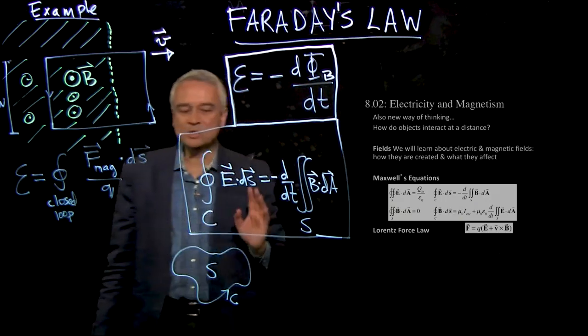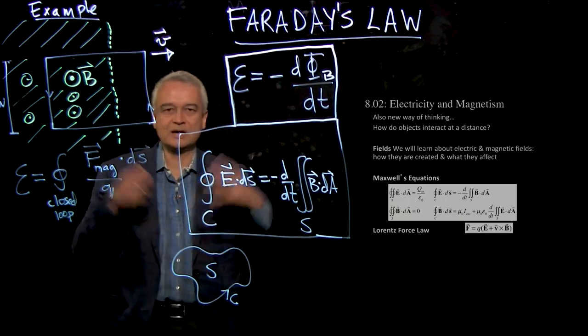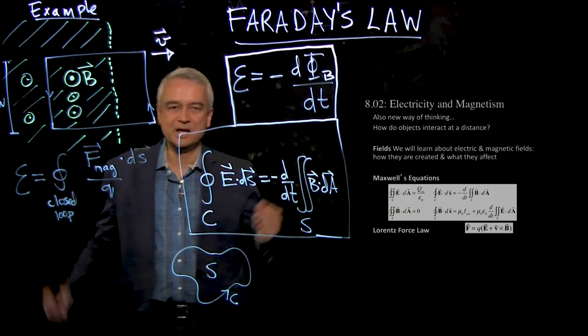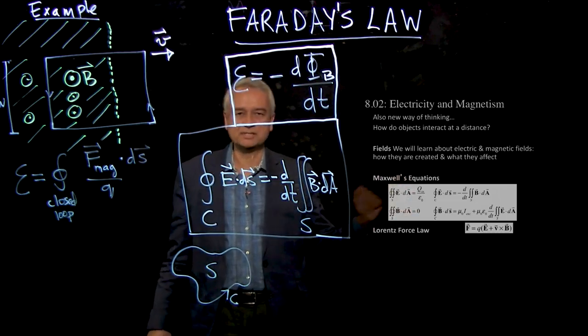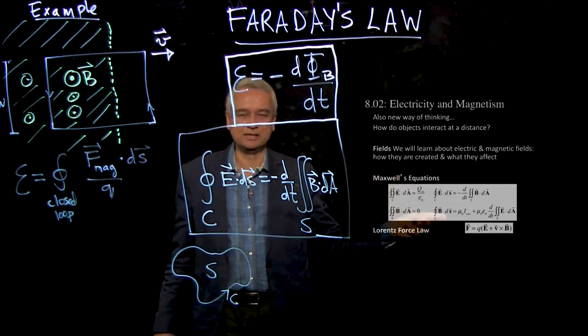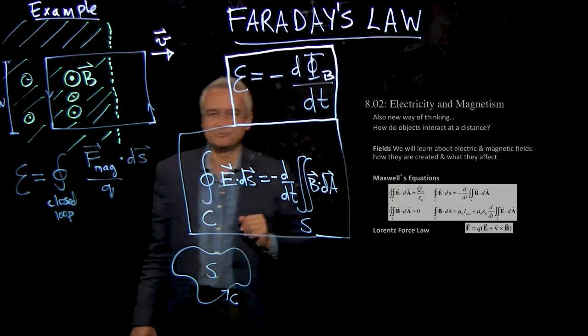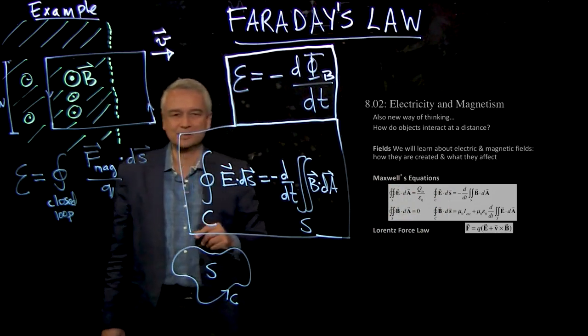So we're almost there in terms of building up the entire structure of 802. We have all of our equations except Ampere's law. The way we have it now is missing something, and we're going to come back to that a little bit further on.